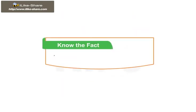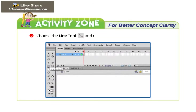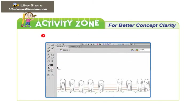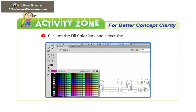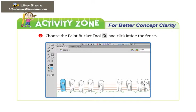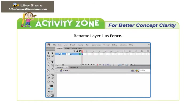Note: Always name the layers with a short meaningful name that indicates the type of content stored in it. Activity: Choose the Line tool and draw the fence as shown in the figure. Click on the fill color box and select the required color. Choose the Paint Bucket tool and click inside the fence. Rename Layer 1 as 'fence'.